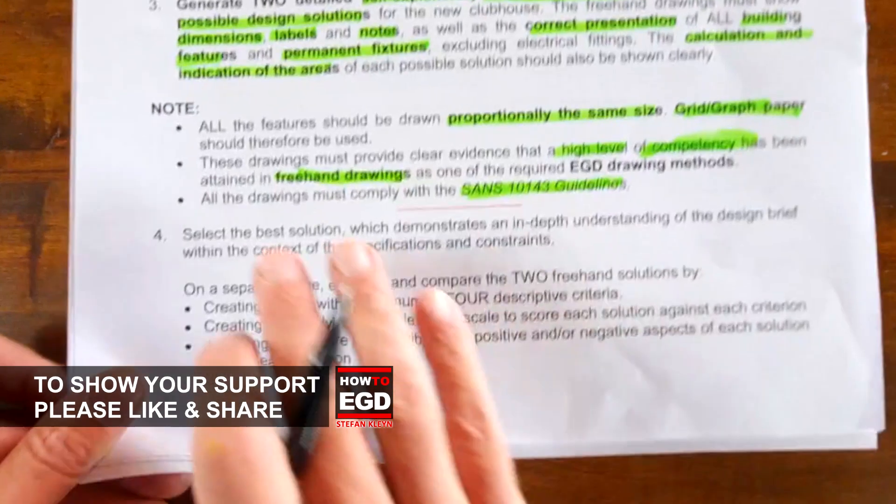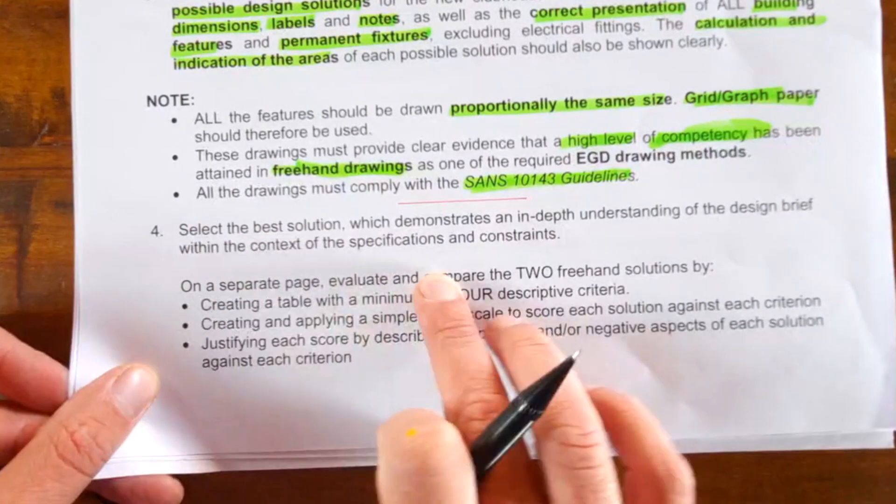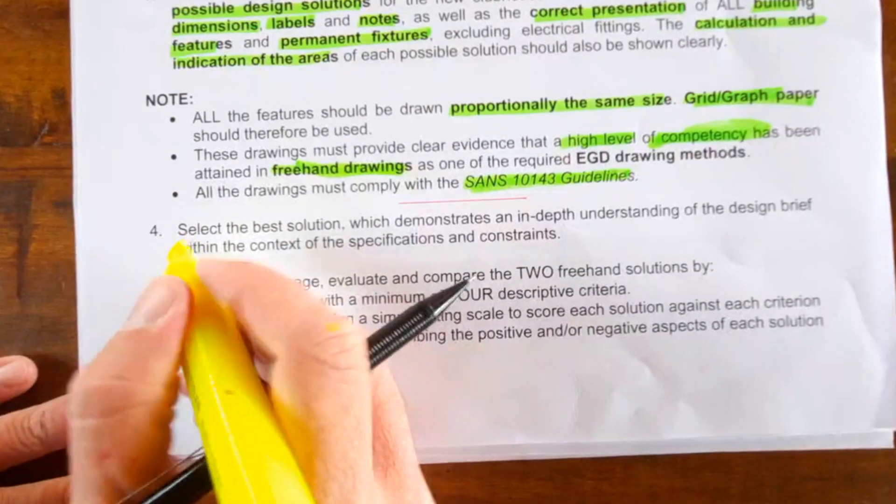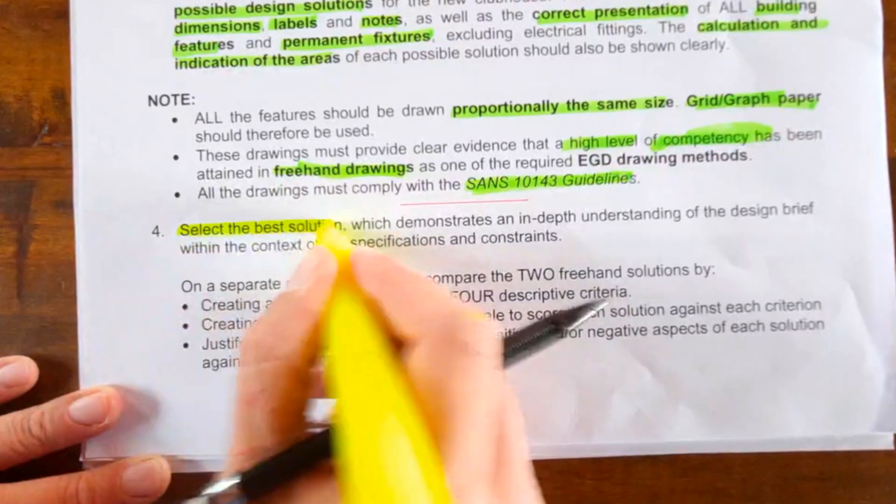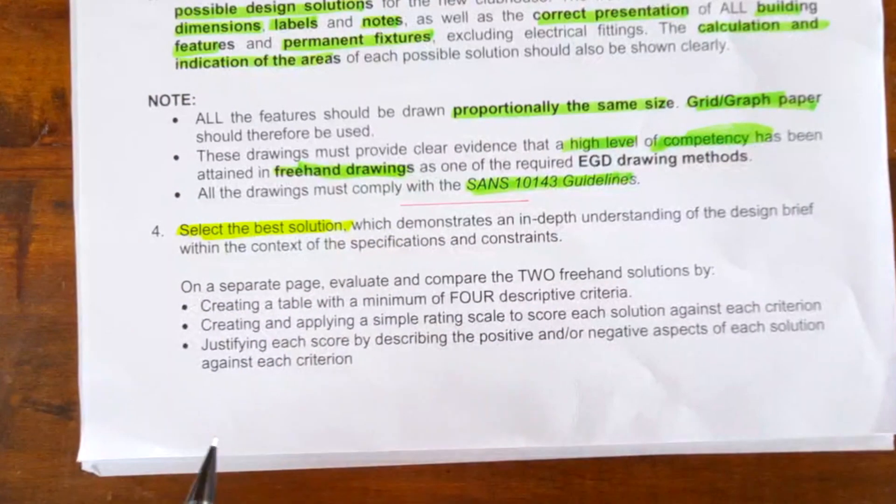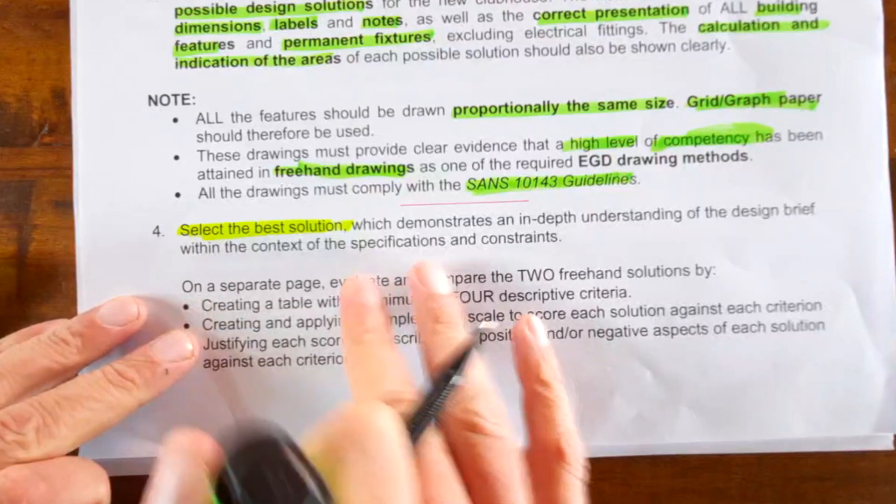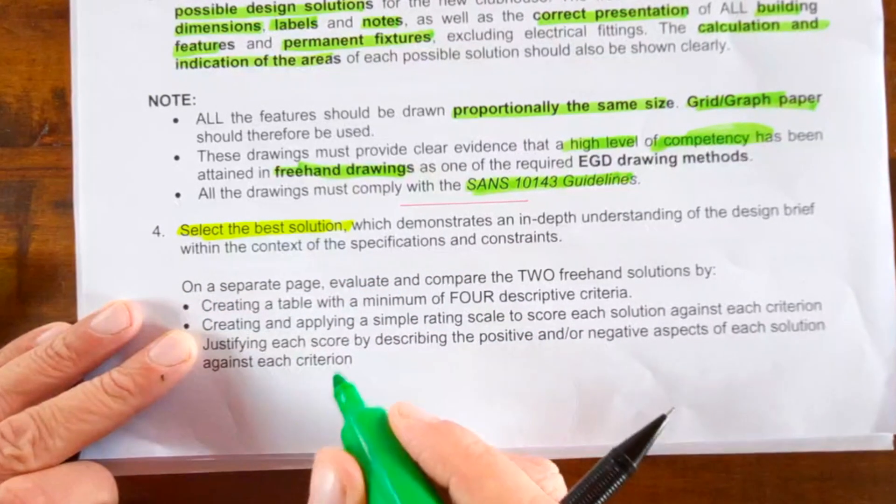Now in this video we're going to go to point number four in your actual PAT document and we're going to be looking at how do you select the best solution for your actual working drawings and this is a requirement that you must meet.